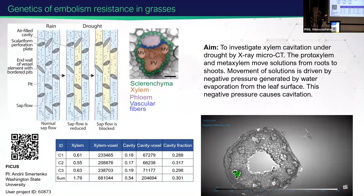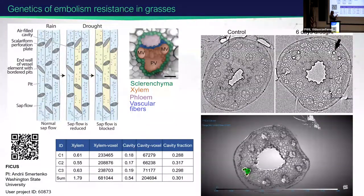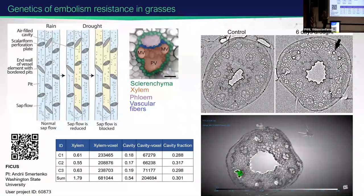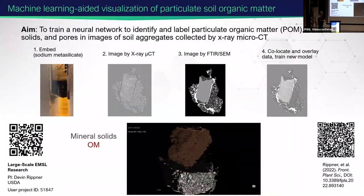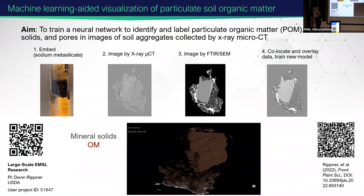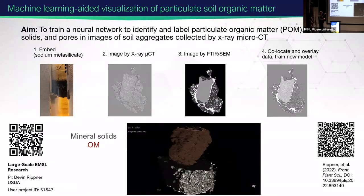We also have examples using micro CT in conjunction with APS, the Argonne light source. Here we were looking at xylem cavitation under drought with micro CT — seeing how micro cavitation exists, changes, and how the ability to uptake water changes within root tissues, providing 3D profiling of root tissues. In another user example, we look at soil mineralogy to understand how different mineralogy changes the organic matter context of a soil core.